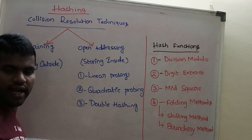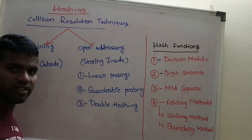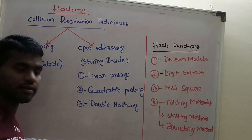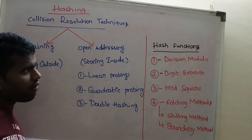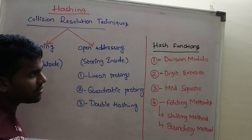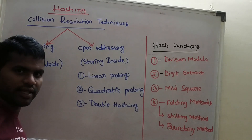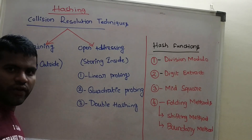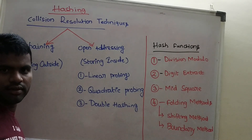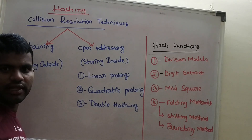Hashing. We will discuss about hashing and collision techniques. Already we discussed about hash functions or hash methods. Total 4 hash methods are there: one is division modulo method, digit extraction method, mid square method, and folding methods. In folding, it is divided into two more — fold shifting method and boundary method.